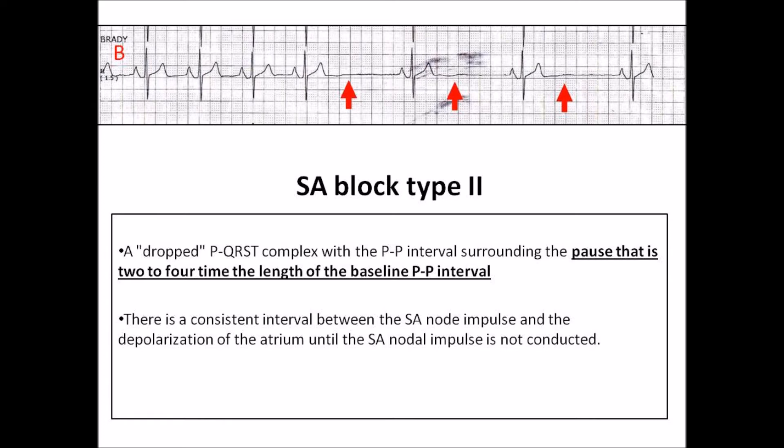Sinoatrial block type 2. In sinoatrial block type 2, there is a dropped P-QRST complex with a PP interval surrounding the pause that is 2 to 4 times the length of the baseline PP interval. This is because there is a consistent interval between the SA nodal impulse and the depolarization of the atrium until the SA nodal impulse is not conducted. In this strip, there is complete absence of the expected P-QRST. The surrounding pause is equal to 2 times the baseline PP interval.